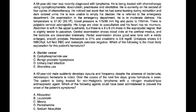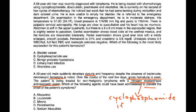Second vignette: A 42-year-old male suddenly develops dysuria and frequency despite the absence of bacteria in the urine. Microscopic hematuria is noted, and over the next few days gross hematuria is seen. The patient is being treated for non-Hodgkin's lymphoma with a nitrogen mustard type anti-neoplastic agent. Nitrogen mustards — cyclophosphamide and ifosfamide — can cause hemorrhagic cystitis as a side effect, and that side effect can be prevented by administering mesna, which is choice C.